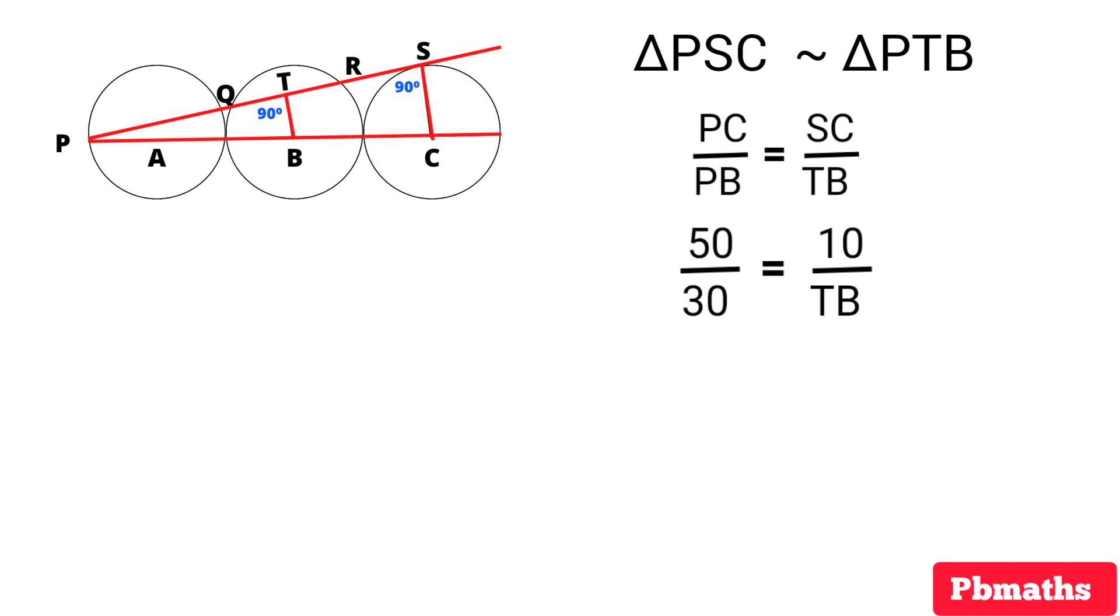we don't know the length of TB, so let's write that TB as it is. Then by simplification, we have TB equals 6 cm.